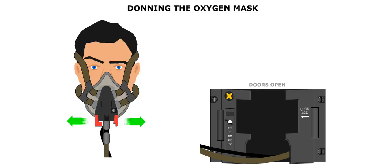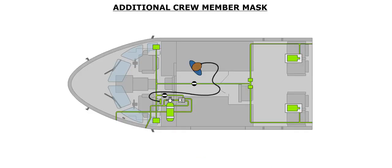Once the mask is placed over the nose and mouth, release the two tabs and oxygen pressure is removed from the harness. The harness collapses and maintains the mask in place. The additional crew member mask has a lengthened tube to allow the observer to reach the cargo compartment.